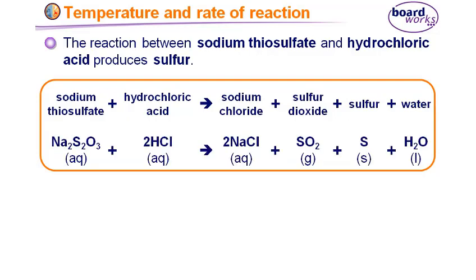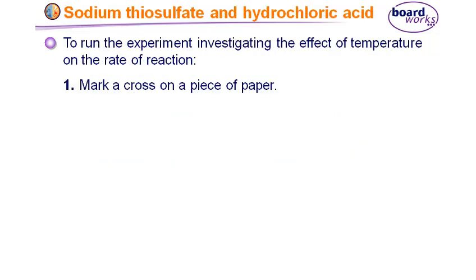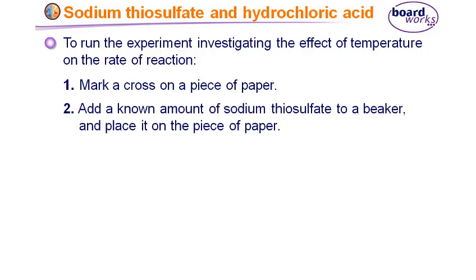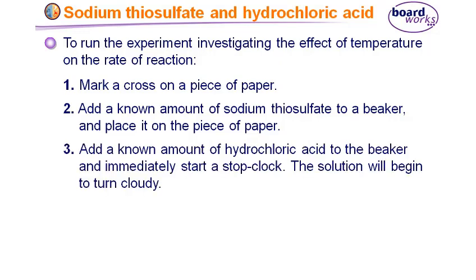We will run this experiment at different temperatures of sodium thiosulfate. The steps are: first, make a cross on a piece of paper — you can write whatever you like. Then add a fixed amount of sodium thiosulfate to a beaker and place it on the piece of paper so you can see the cross sign through the beaker. Then add a fixed amount of hydrochloric acid to the beaker and immediately start the stopwatch. The solution will begin to turn cloudy.